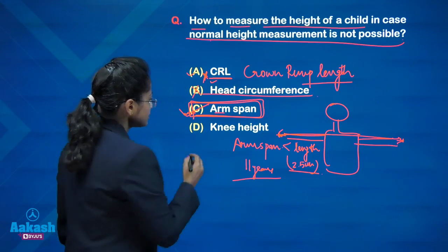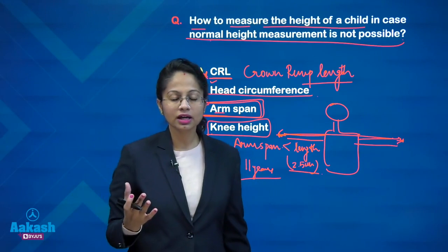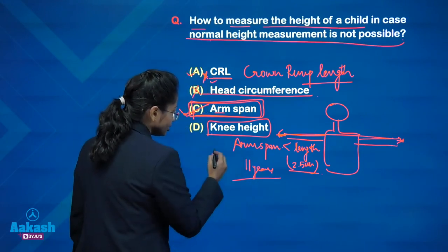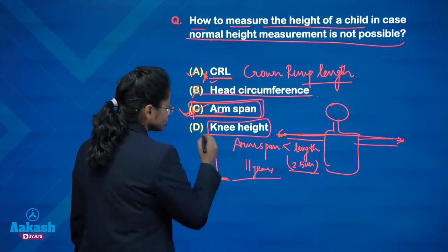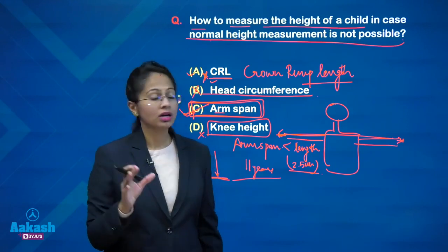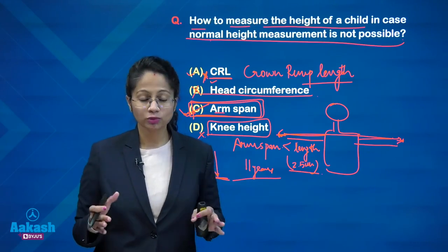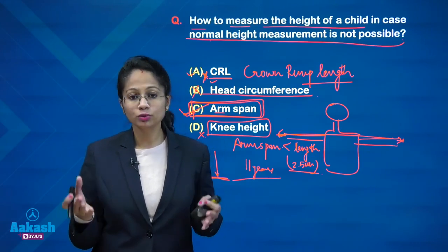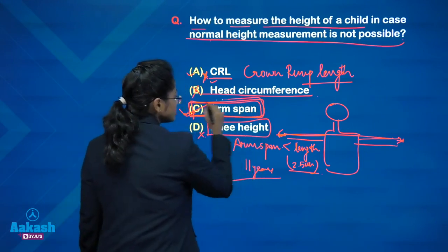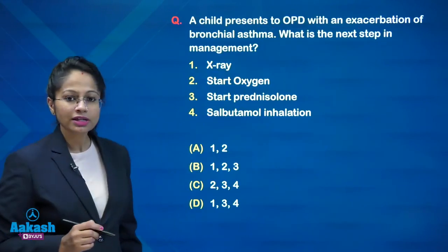The fourth option is knee height — the height from the knee to the bottom — and this is not the answer. Knee height can sometimes be used in critically ill, non-ambulatory patients, intubated patients, or patients with cerebral palsy. But the right answer is arm span.